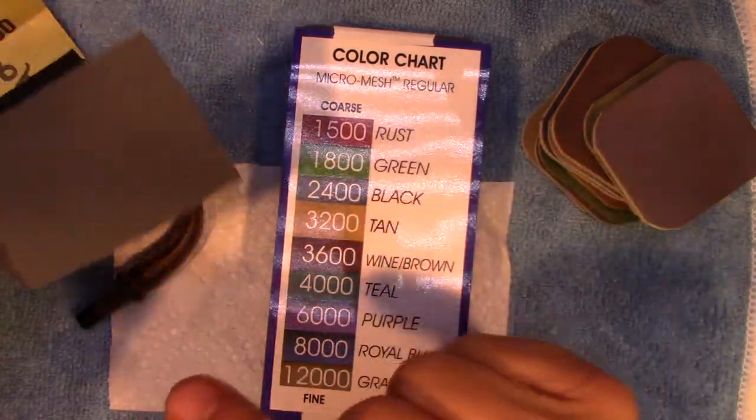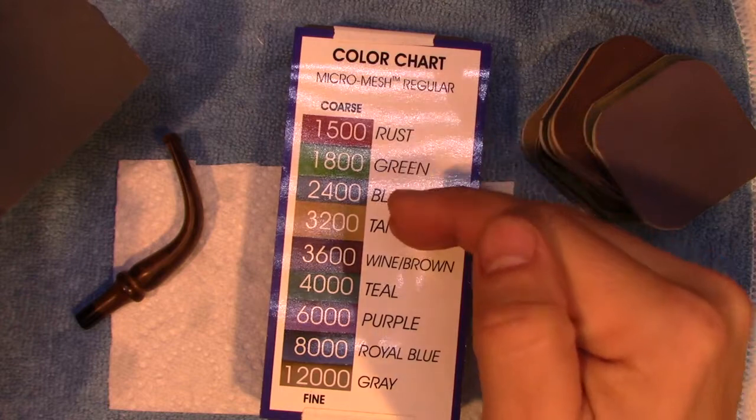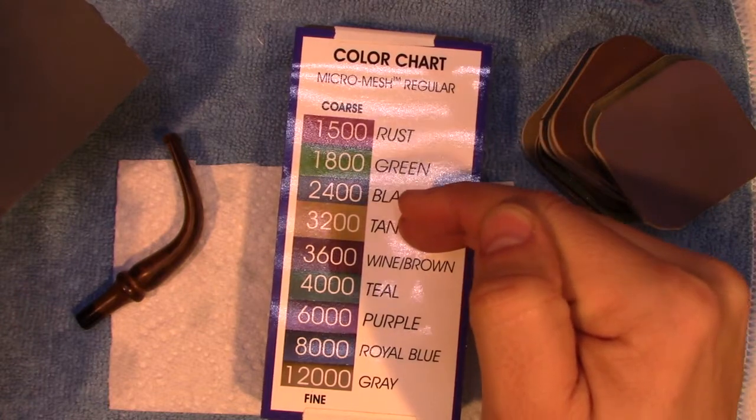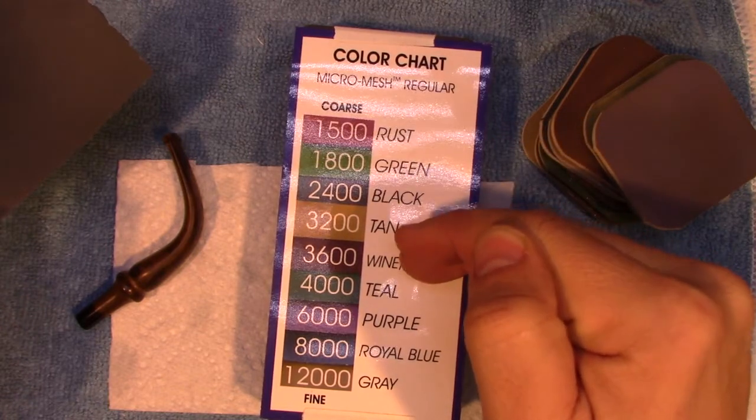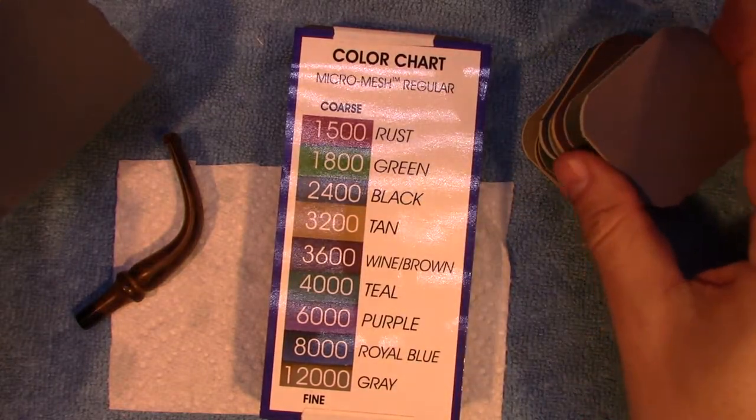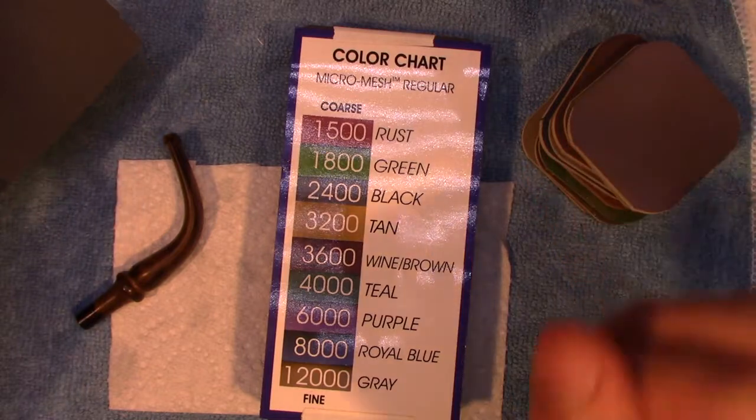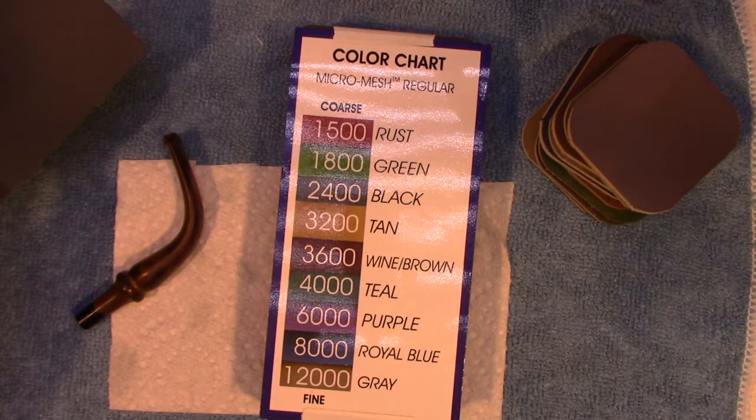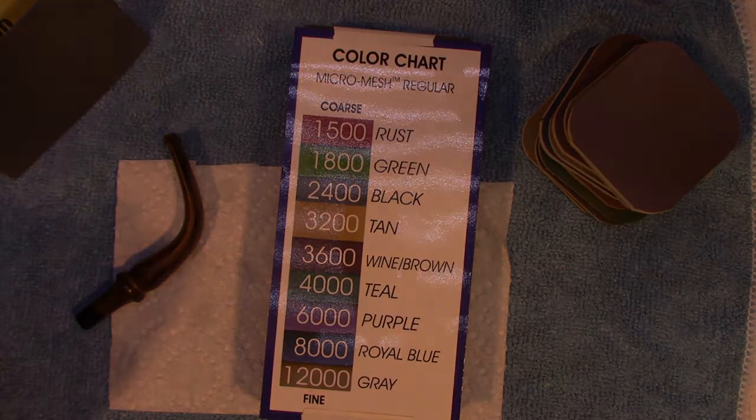Then switch over to the micro mesh pads and work my way through the grits on those. So going from the 400 grit to a 600 grit sandpaper and then jump to the 1500. It'll be wet sanding. The sandpapers all the way up to 3200, I'll sand with water. Then I'll switch to the finer grit micro mesh pads and sand dry until we're complete.